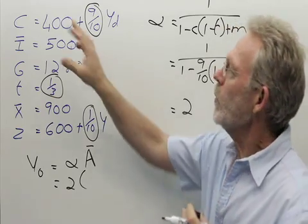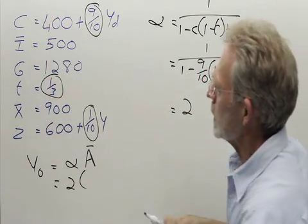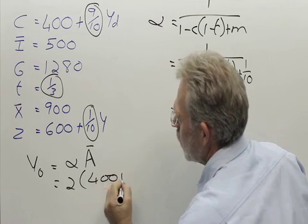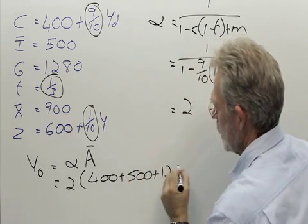Autonomous A consists of all the autonomous part of spending. In other words, 400 plus 500 plus government spending, 1,280,